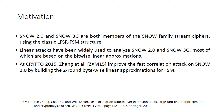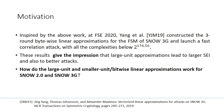At Crypto 2015, John et al. improved the fast correlation attack on SNOW 2 by building the two-round bitwise linear approximations for FSM. Inspired by this work, at FSE 2020, Yang et al. constructed the three-round bitwise linear approximations for FSM of SNOW 3G and launched a fast correlation attack.